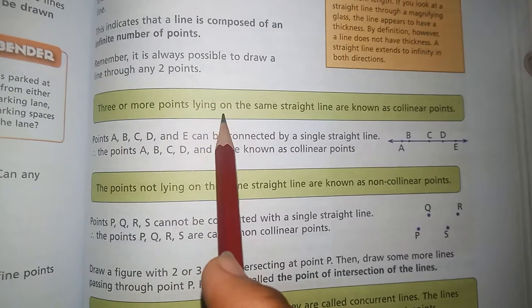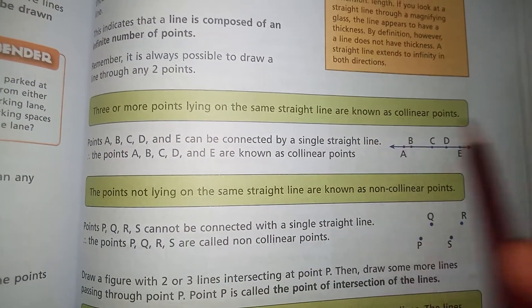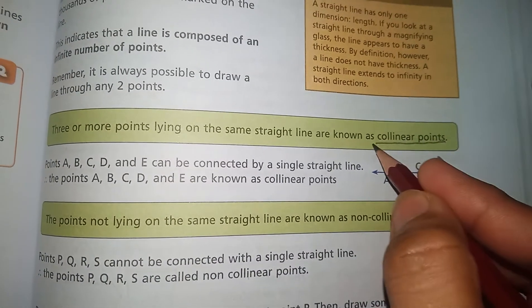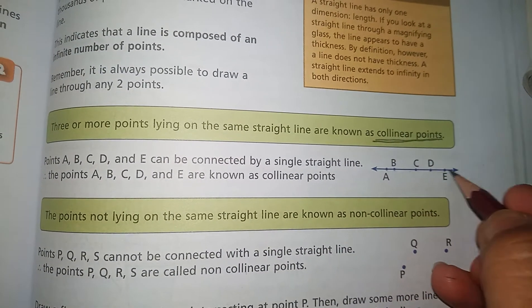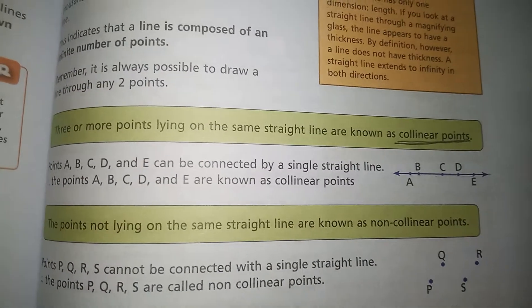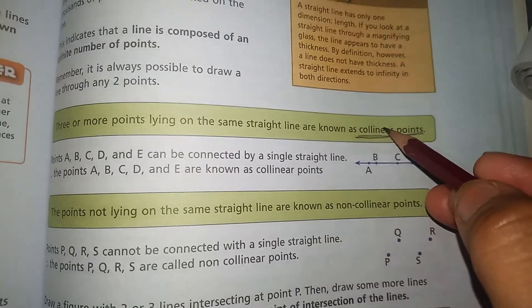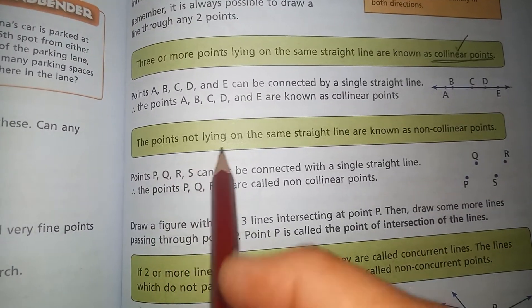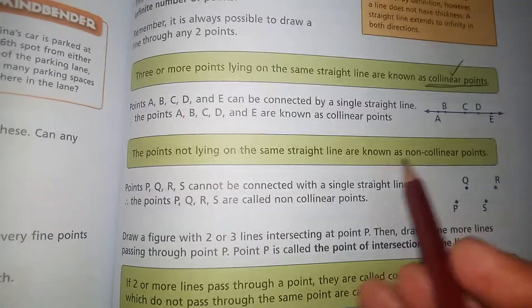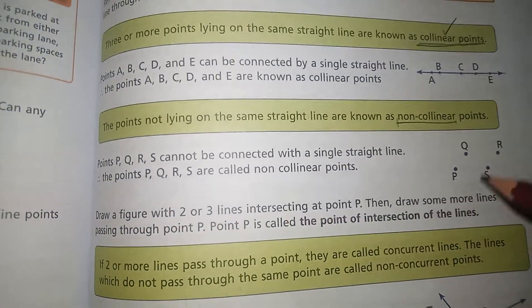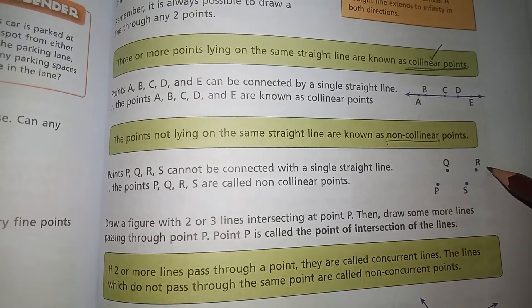Three or more points lying on the same straight line are known as collinear points. Collinear means lying on the same line — this could be part of your objective, so you have to memorize these points. The points not lying on the same straight line are known as non-collinear points.